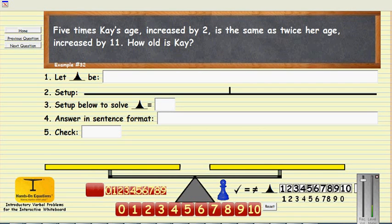Let's see how we might do this verbal problem on the interactive application. We have five times k's age increased by two is the same as twice her age increased by 11. How old is k?